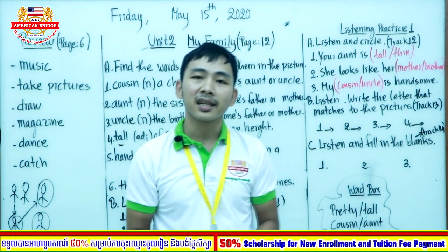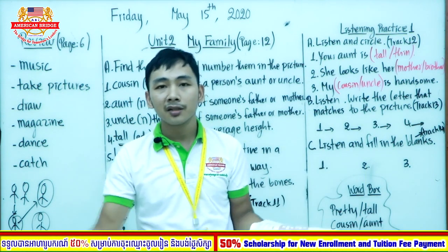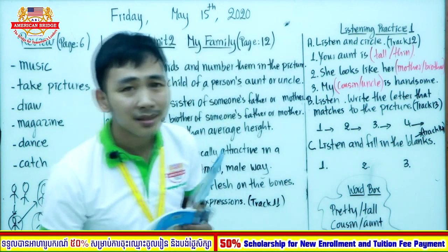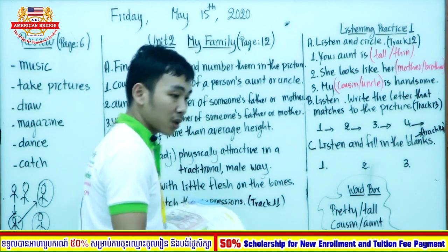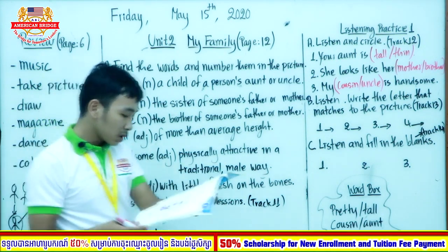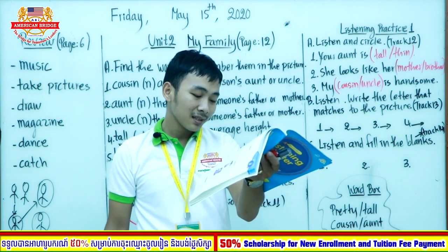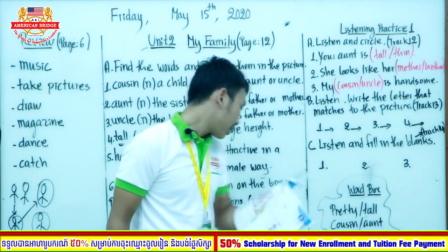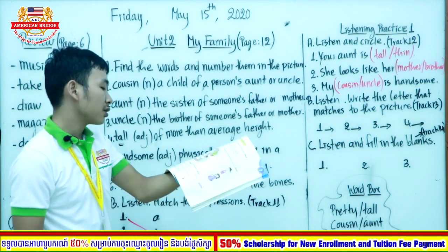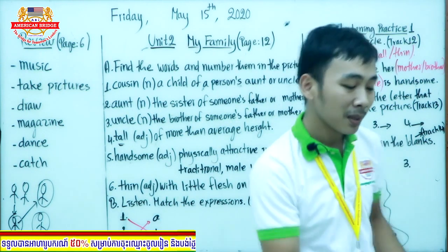Welcome back. Let's check the answers together. Number 1: 'This is my grandfather' — go to letter B, he looks kind. Kind means generous. Number 2: 'What does your brother look like?' — go to letter C, 'My brother is very handsome.' Number 3: 'That is my mother' — go to letter A. Did you get the right answers?